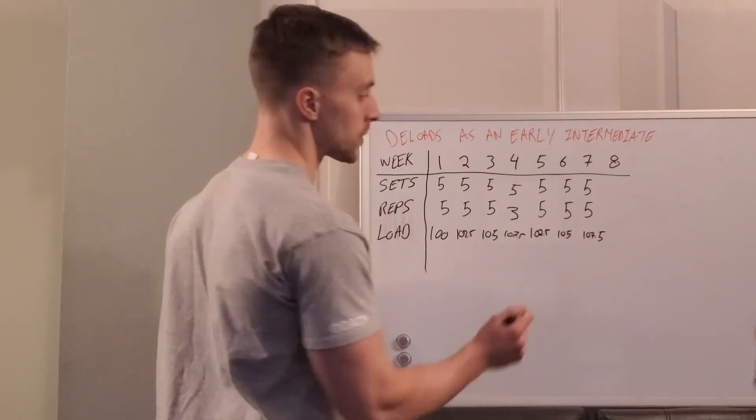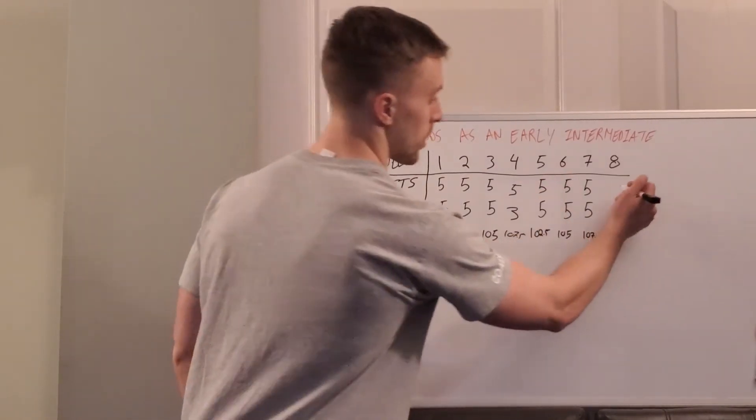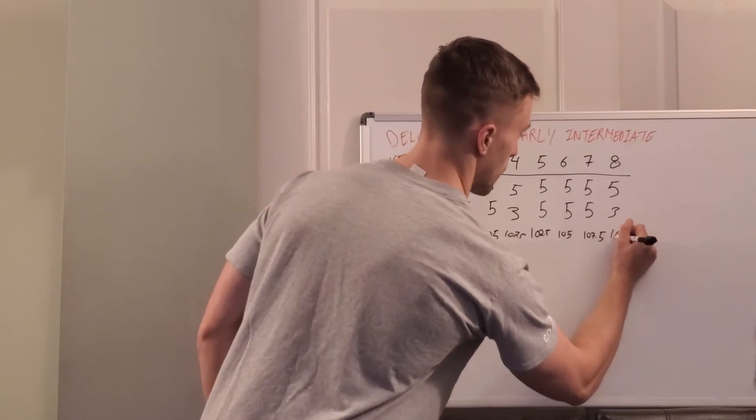So then we would simply go back to our week one five by five, weeks one through three, and then five triples at 110.